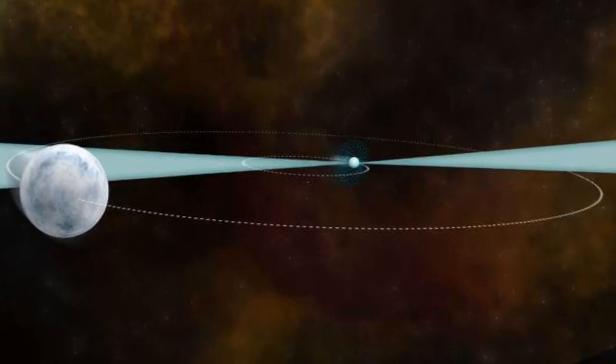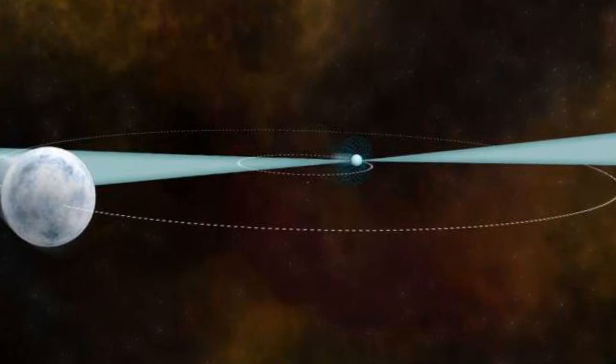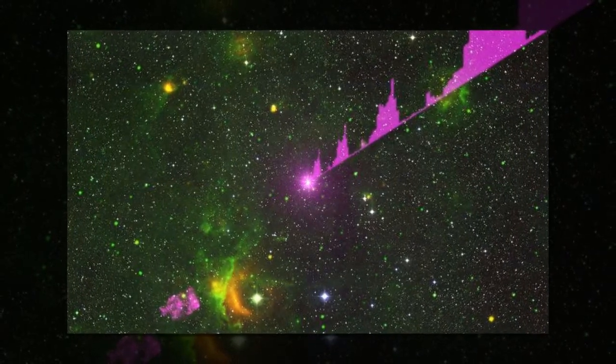Pulsars are the rapidly spinning, super-dense remains of massive stars that detonated as supernovas. They are detected from Earth by the beams of radio waves that emanate from their magnetic poles and sweep across space as the pulsar rotates.